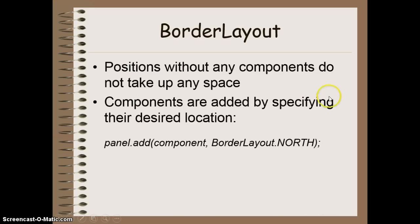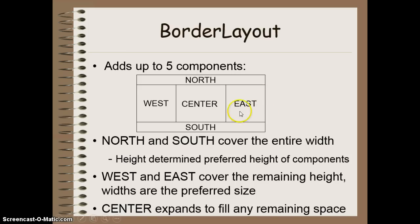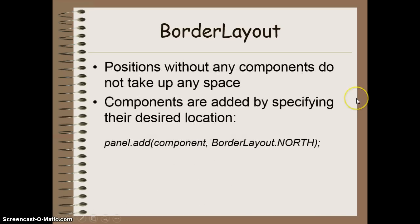Any position in the Border Layout that doesn't have a component doesn't take up any space. For example, if you don't place anything in the east area, the center area will expand to cover that space as well. When adding a component, you provide a second argument specifying the location — BorderLayout.NORTH, EAST, SOUTH, WEST, or CENTER — meaning only one component can be placed in each area.